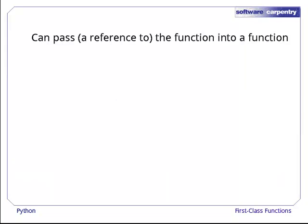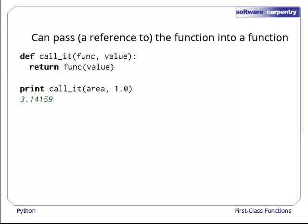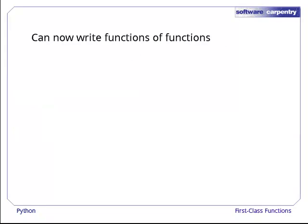Let's go a little further. Instead of storing a reference to a function in a list, let's pass that reference into another function, just as we would pass a reference to an integer, a string, or a list. Here's a function called callit that takes two parameters, a reference to some other function and some other value. All callit does is call that other function with the given value as a parameter. Let's test it with area and 1.0. That's right. And with circumference and 1.0? Right again. So far so pointless, but now it's time for the payoff: functions of functions.